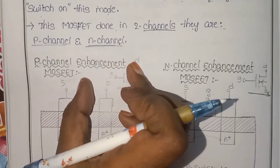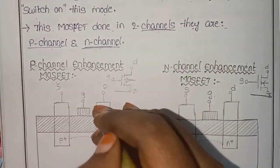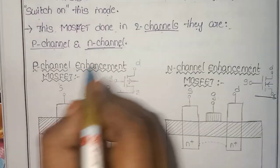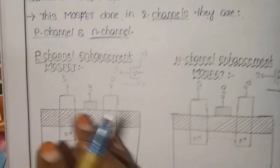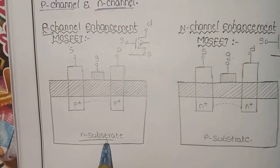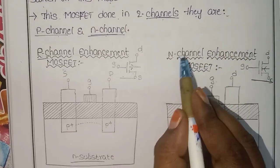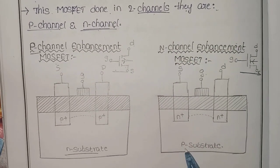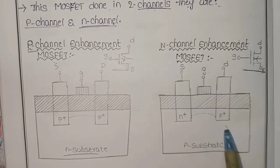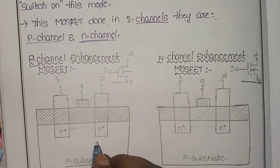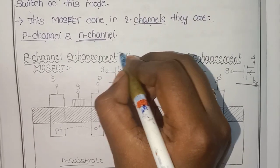Enhancement mode MOSFET versus depletion mode: the source-drain channel is opposite. For P-channel, the substrate is N-type. The N-substrate is characteristic of the depletion region. For the source-drain, the substrate is P-type in the other configuration. This is the enhancement mode MOSFET.